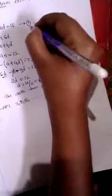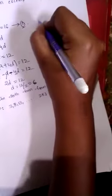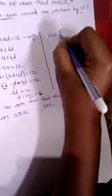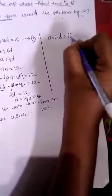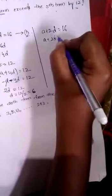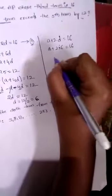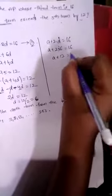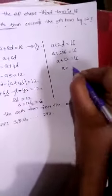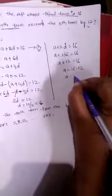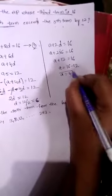Now we know the D value. Substituting D into equation 1: A plus 2D equals 16. A plus 2 into 6 equals 16. A plus 12 equals 16. Therefore A equals 16 minus 12, so A equals 4.